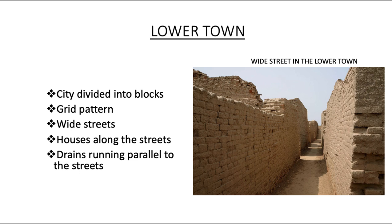In the lower town, the city was divided into blocks with a grid pattern, meaning roads cut across each other at right angles. Wide streets were present, and houses were built along the streets. It appears that the streets with drains were laid out first, and then houses were built along them. Domestic waste water flowed into the street drains.